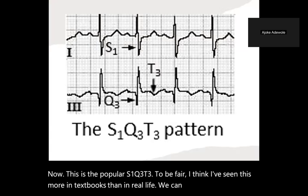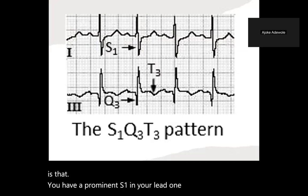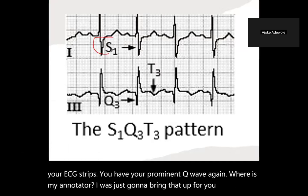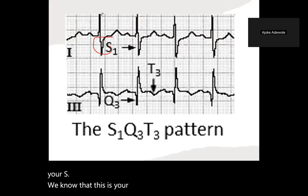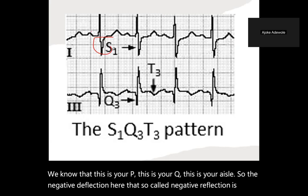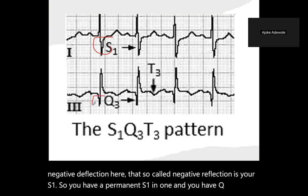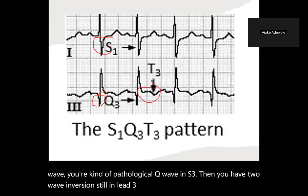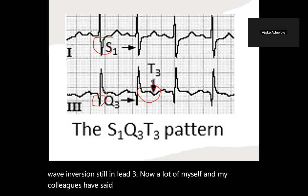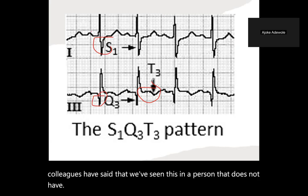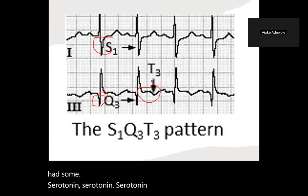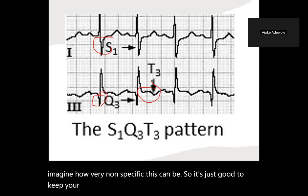S1Q3T3 means you have a prominent S wave in lead one, and in lead three you have a prominent Q wave — a pathologic Q wave — and T-wave inversion still in lead three. A lot of myself and my colleagues have seen this in patients that do not have pulmonary embolism. I've seen it in a patient with serotonin malignant syndrome. So keep your mind open with this ECG finding — it can be very rare and non-specific, even though it is supposed to be pathognomonic for PE.